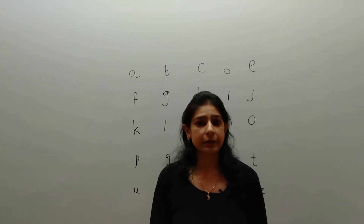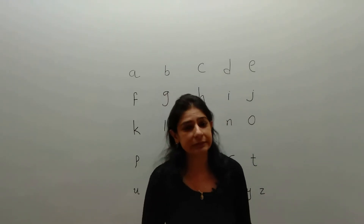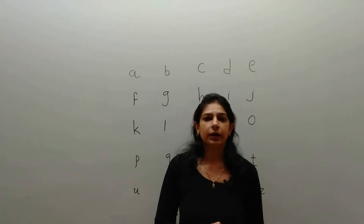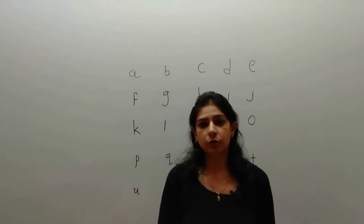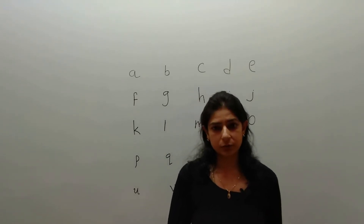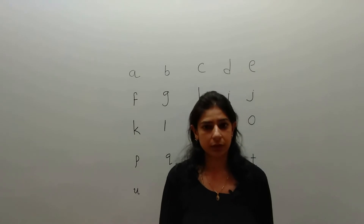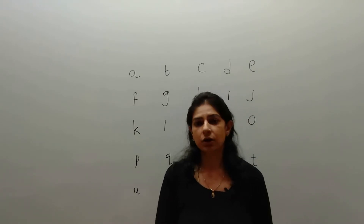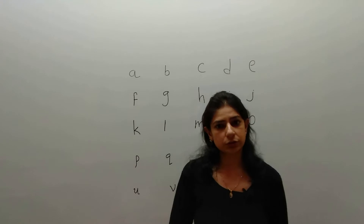In English alphabets there are 26 letters. In English there are five main vowels and one special vowel, and the rest are consonants. So let's look at the board and get started.